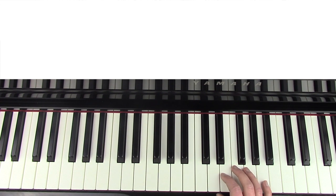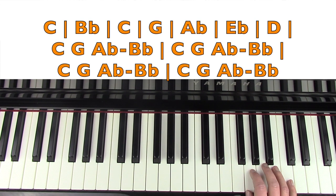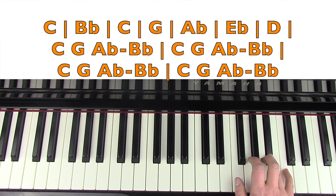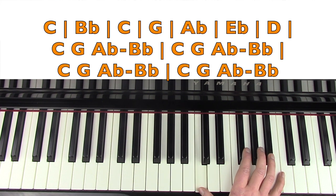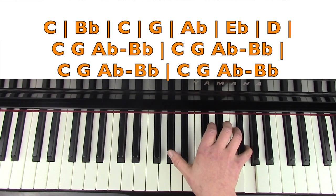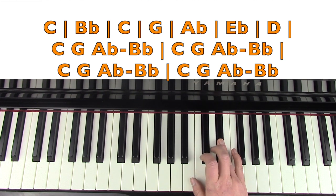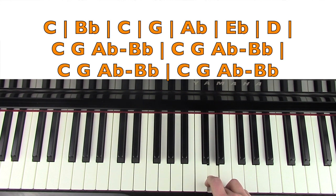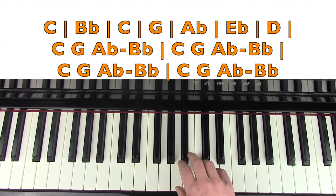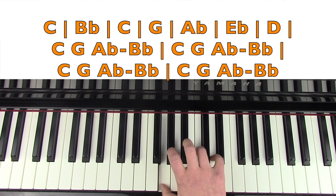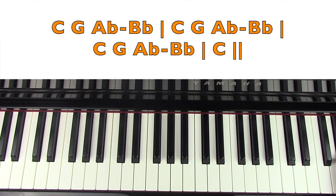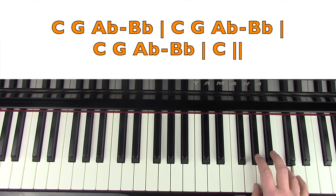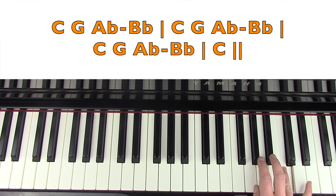Now that theme almost repeats again, so I'm going to call this theme 2A. I'm going to go over the right hand first: we go C, B flat, C, G, A flat, E flat, D. Then we might as well go into the outro, so you're going to play the C, G, A flat, B flat four times. Then the right hand can come all the way up here, play that three more times. But I'll play it here so it's in shot. And then that's how it ends.